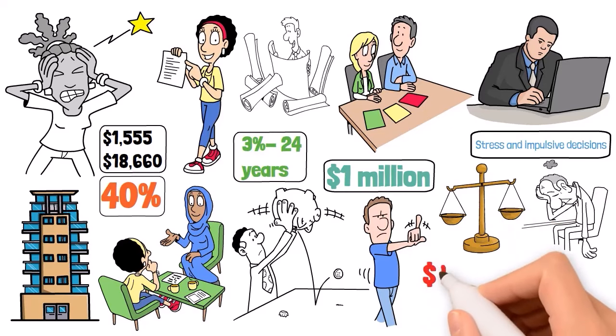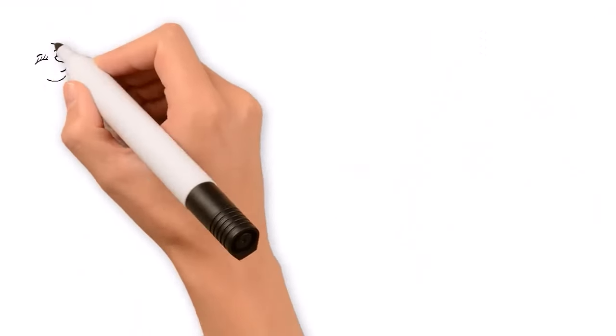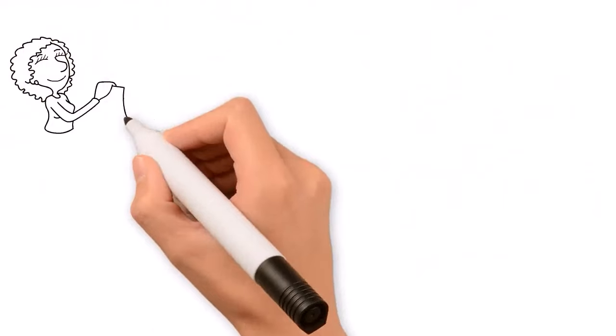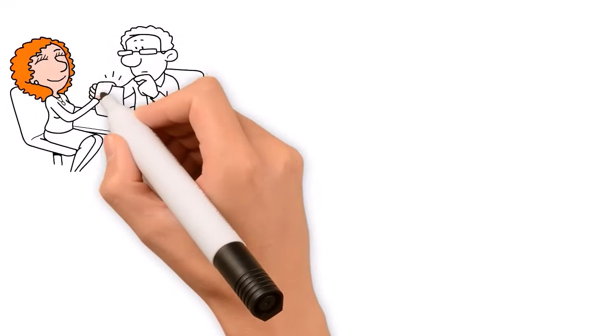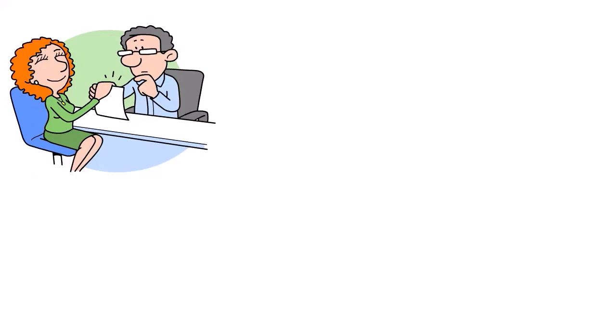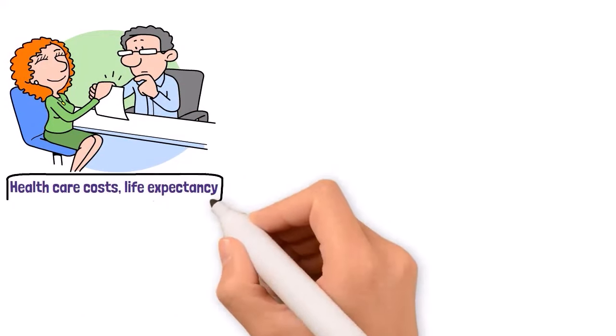The $1,000 per month rule suggests that for every $1,000 of monthly income you want in retirement, you need to save $240,000, assuming a 5% annual withdrawal rate. It's a quick way to estimate, but it doesn't account for inflation or changes in spending habits. This rule is a starting point. Your actual needs may vary based on healthcare costs, life expectancy, and other factors.